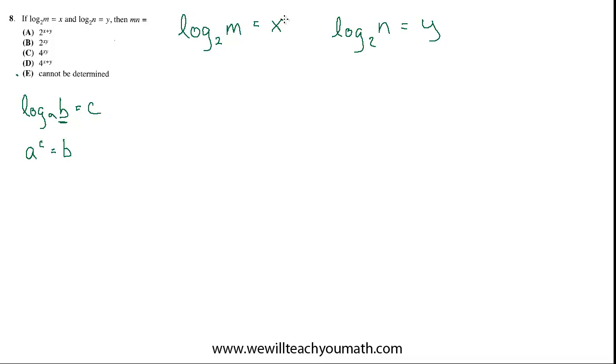So if log base 2 of m equals x, 2 is the base, x is the power that it's being raised to, and m is the result. So this is the exponential version of this equation. These two things mean the exact same thing. They're not different at all. They're just two different ways of expressing the same mathematical relationship.